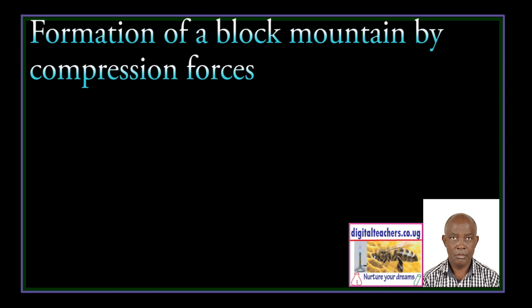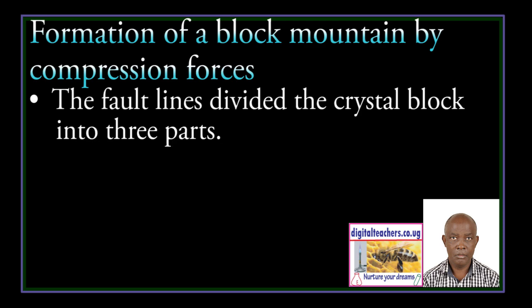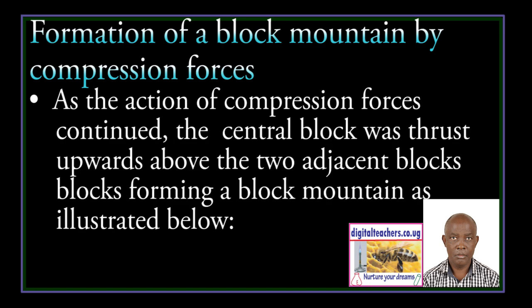Formation of Block Mountain by compression of forces. Compression forces push a crustal block of land on either side, resulting in stressing and development of reverse fault lines. The fault line divides the crustal block into three parts. As the action of compression forces continued, the central block was thrust upwards above the two adjacent blocks, forming a Block Mountain as illustrated below.